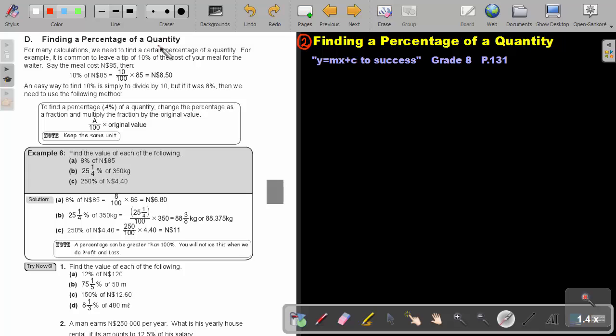Finding a percentage of a quantity. For many calculations, we need to find a certain percentage of a quantity. For example, it is common to leave a tip of 10% of the cost of a meal for the waiter. Say the meal costs 85 Namibian dollar. Then 10% of 85 Namibian dollar will be 10 out of 100 times 85, and that will be 8 Namibian dollar and 50 cents. An easy way to find 10% is simply to divide by 10.